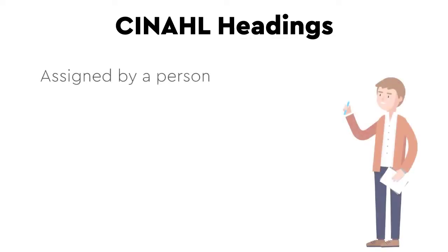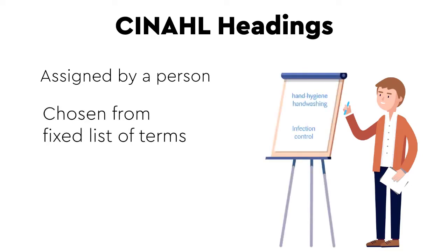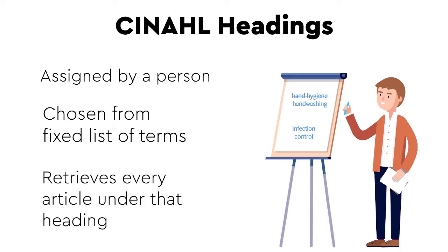Let's look at a different technique. Previously we have been using keywords to search. Now we will look at CINAHL headings. When new articles are added to a database, they are read by an indexer who decides what topics are covered and assigns subject headings. These subject headings must be chosen from a fixed list of headings prepared by CINAHL. When you search using CINAHL headings, you will retrieve every article to which such a heading has been applied.